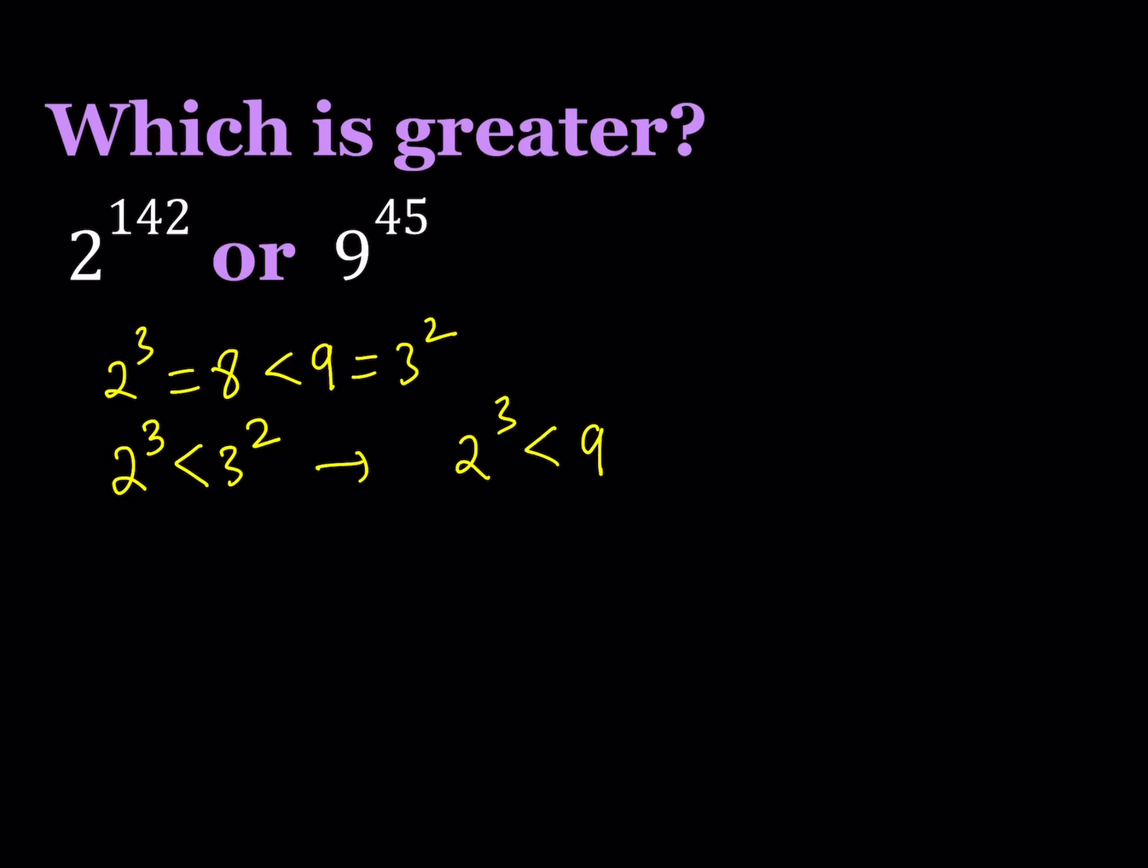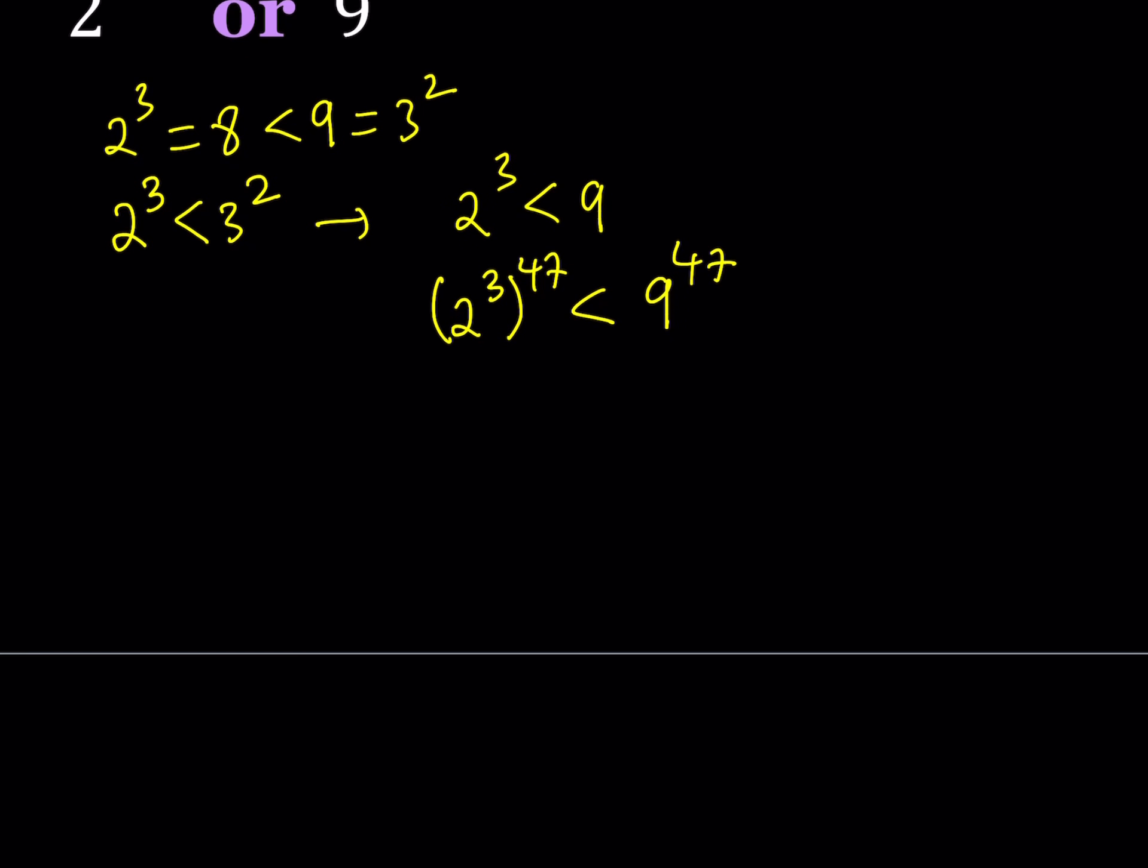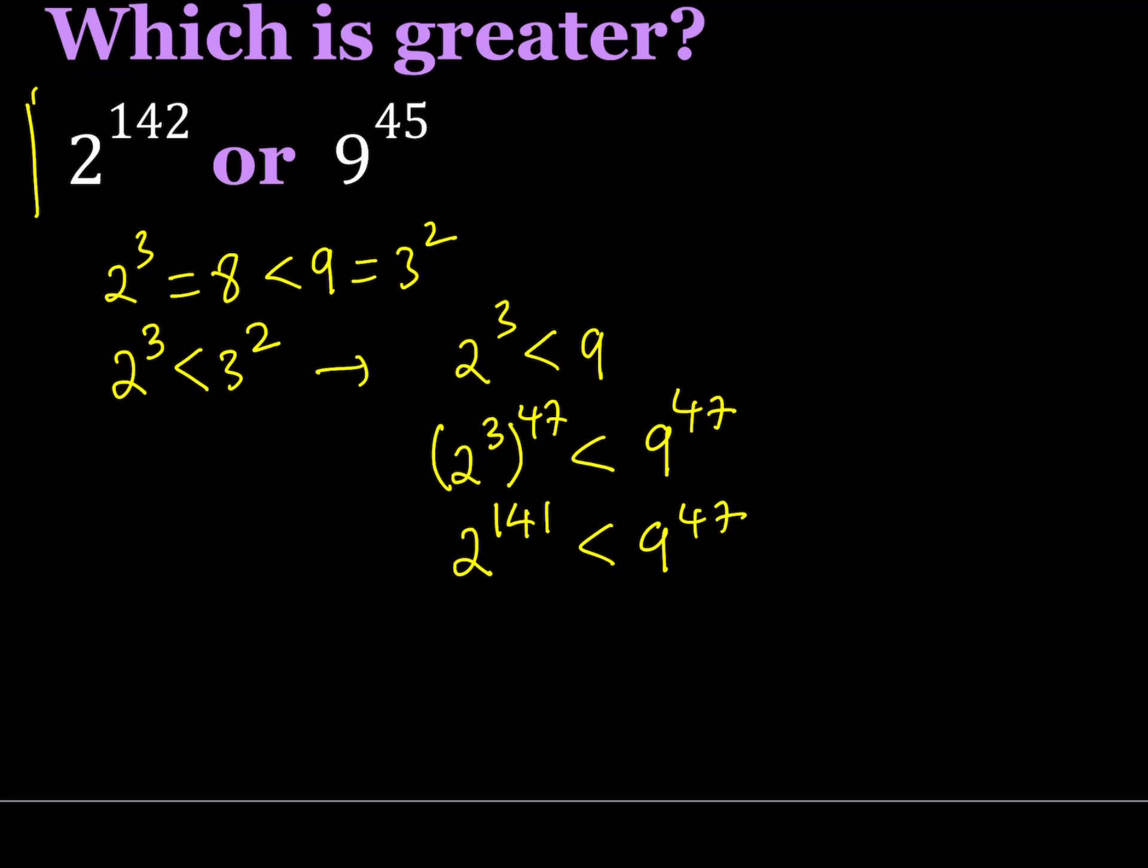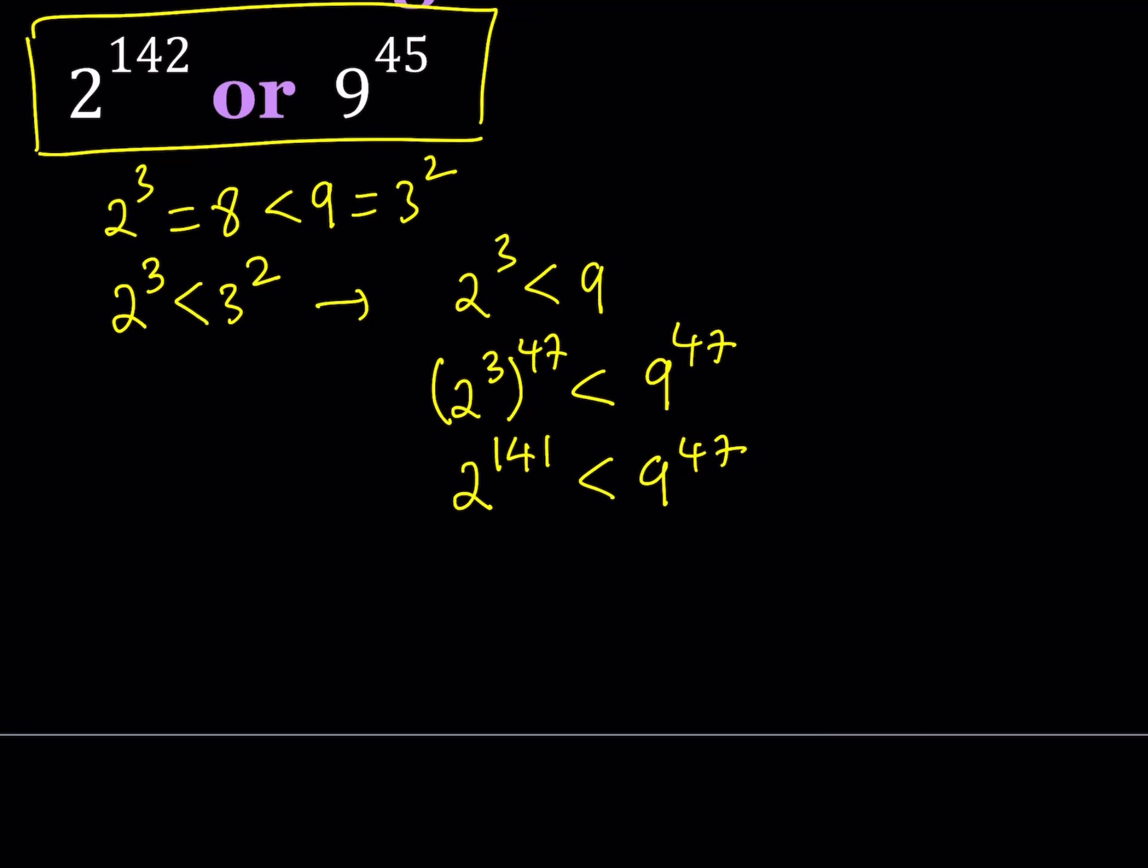Now, I want to get to 142, so a good step here would be to divide 142 by 3. And if you do, you're going to get 47. There's going to be a remainder because 142 is not divisible. But if you go ahead and take this number and raise it to the power of 47 and do the same thing on the right-hand side, you'll get a true inequality. This gives us 2 to the power of 141 is less than 9 to the power of 47.